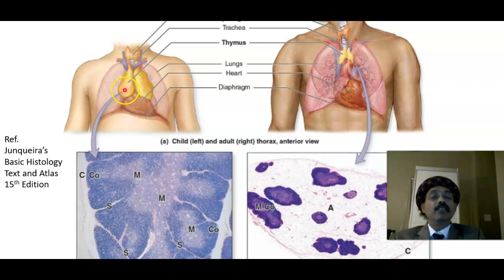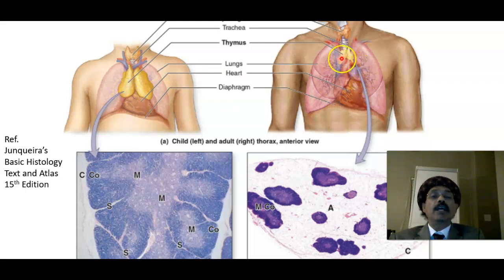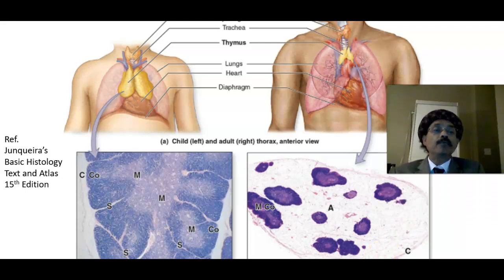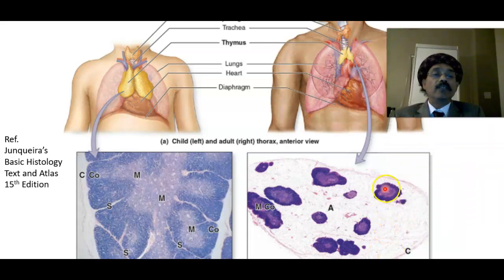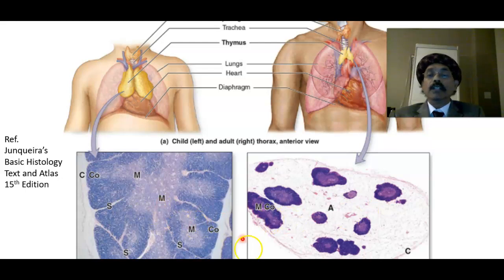The thymus is large in children and atrophied and small in an adult, replaced by adipose tissue. The white area visible here is adipose tissue, and this is the lymphoid tissue with the cortex and the medulla. The medulla contains Hassall's corpuscles, also called thymic corpuscles. This shows the cortex and medulla in a child.